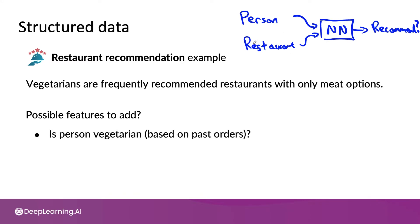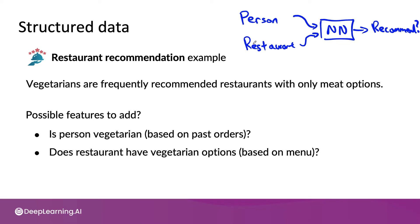Specifically, one feature you can consider adding is a feature that indicates whether this person appears to be vegetarian. This doesn't need to be a binary zero-one value — it could be soft features, such as the percentage of food ordered that was vegetarian, or some other measure of how likely they seem to be vegetarian. And a feature to add on the restaurant side would be whether this restaurant has good vegetarian options, based on the menu.